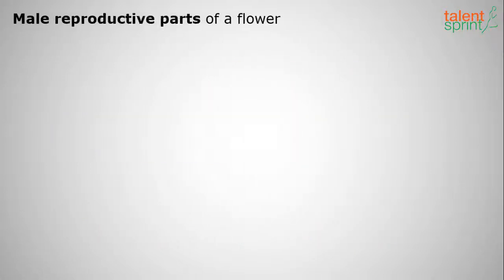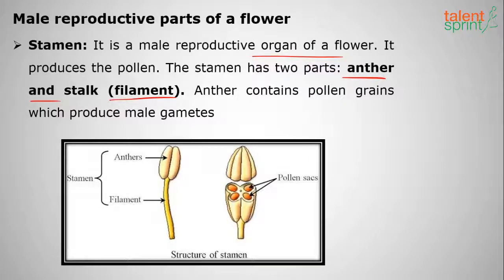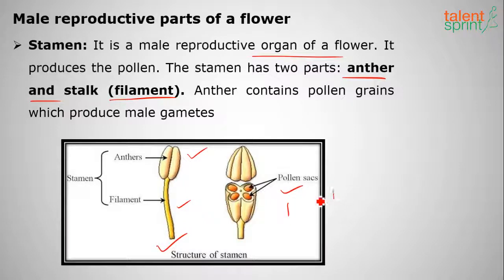Moving on to the male reproductive parts of a plant: the stamen contains two parts — the anther at the top and the filament (or stalk) that holds it. You can see the diagram. In the anther, we have pollen grains.